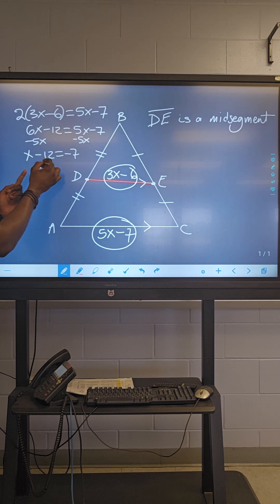If we should add 12 to both sides, then X is equal to five.